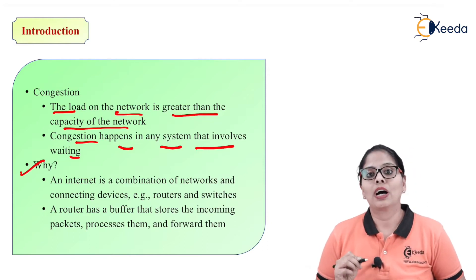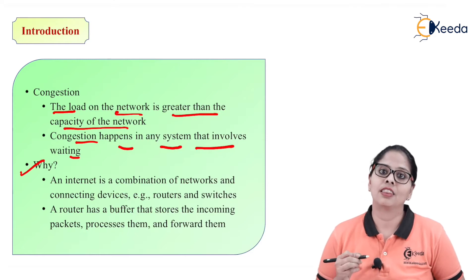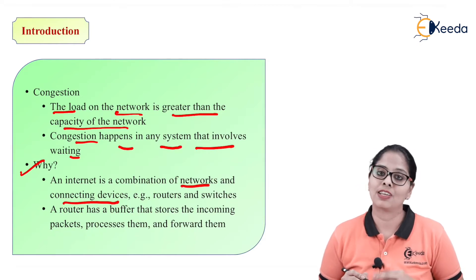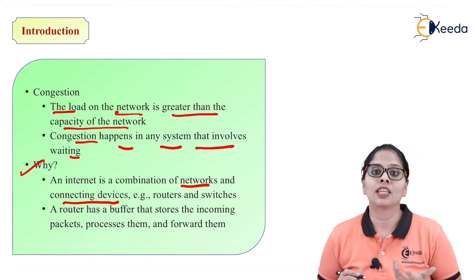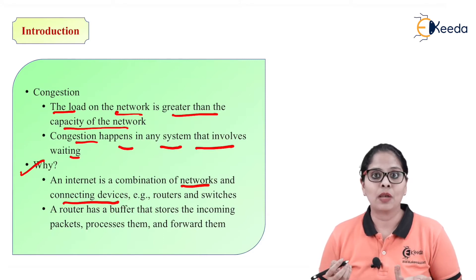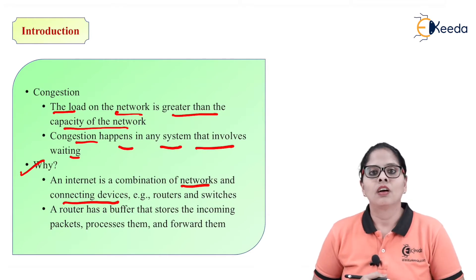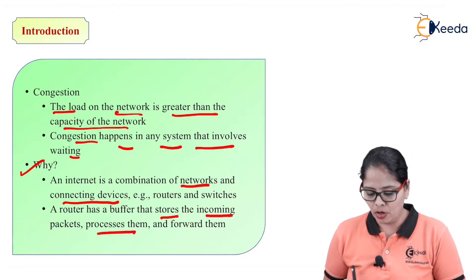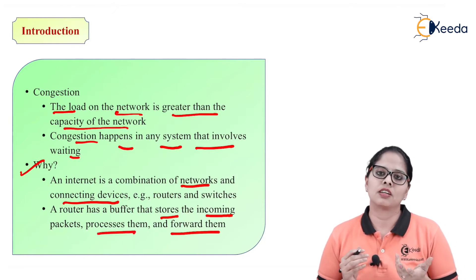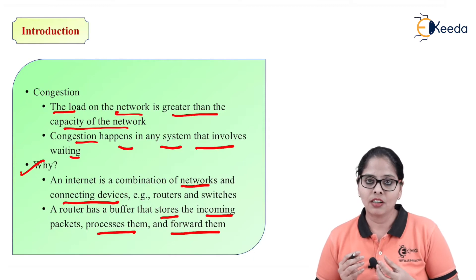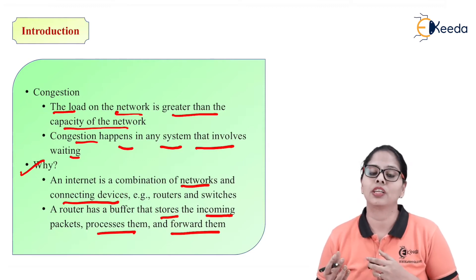Why is there congestion in the network? The internet is a combination of networks and connecting devices — routers and switches. A router has a buffer that stores incoming packets, processes them, and forwards them. Whenever a packet comes to the router, it is stored in the buffer, processed, and then forwarded to the next path.